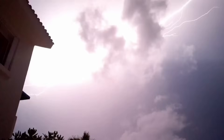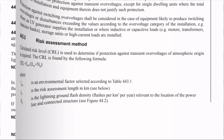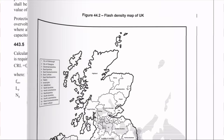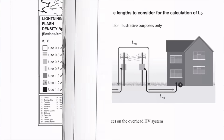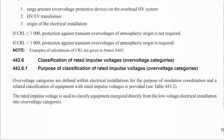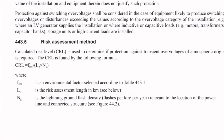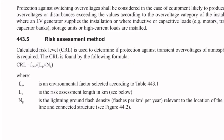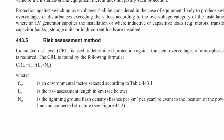Some time ago we made a video explaining how to figure out if a property required surge protection or not. We went through pages and pages of the regs, looking at lightning strike rate maps, figuring out how to find lengths of supply cables to a property, what sort of environment the installation was in, and then doing a long calculation to figure out the risk factor of the damage a lightning strike was likely to cause, in order to decide if we should install surge protection or not.